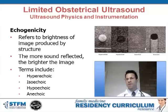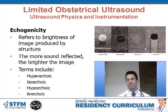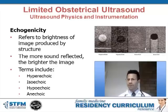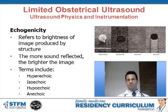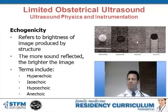When we describe the image created by ultrasound, we refer to a structure's echogenicity — the brightness of the structure produced. The more sound waves are reflected back from the tissue, the brighter the image. We describe images in relation to their surroundings: an image that is brighter than its surroundings is hyperechoic; one that is darker than its surroundings is hypoechoic; and one that is the same brightness as surrounding tissue is called isoechoic, or the same echogenicity.